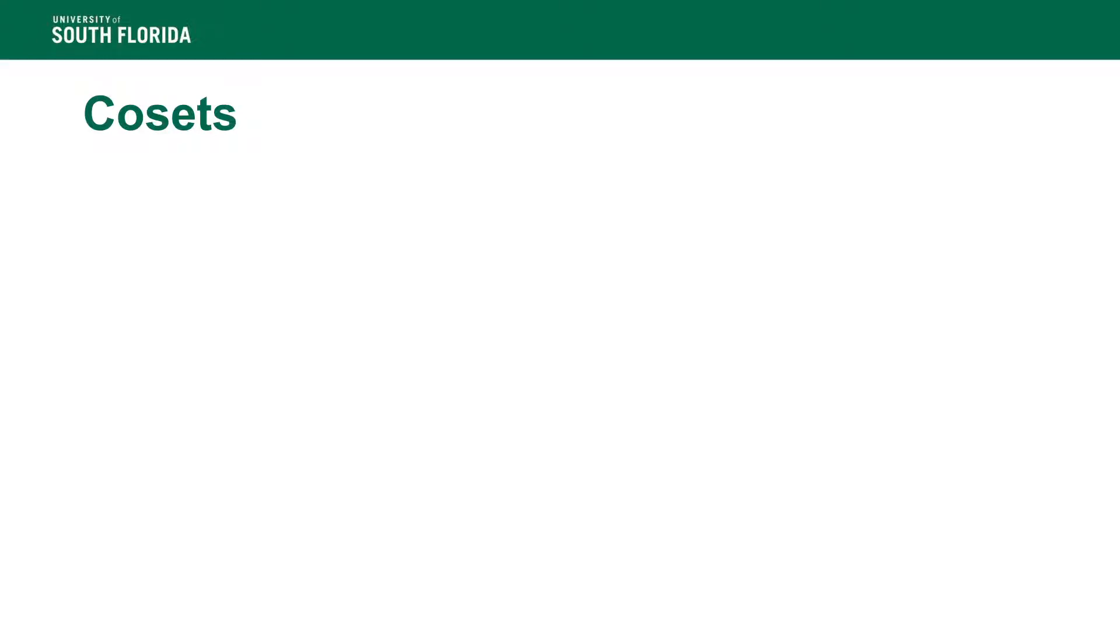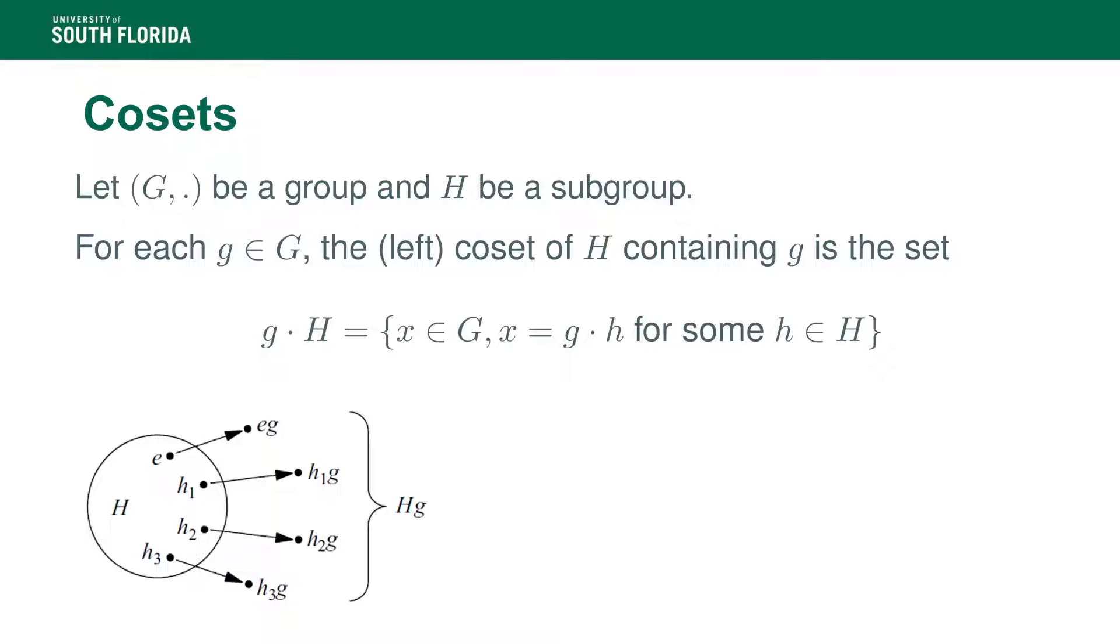Now, we will need the concept of cosets to explain what the hidden subgroup problem is. So we have a group G and a subgroup H. And then a left coset is a set of the form of all the elements G times an element in H. So that is the left coset containing G. We have that it's the set of X's in G such that X is of the form G times H for some H in the subgroup.